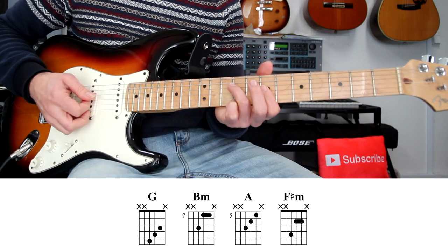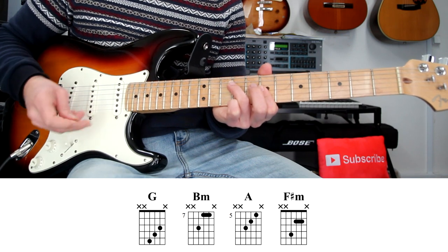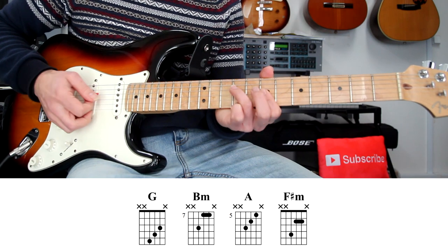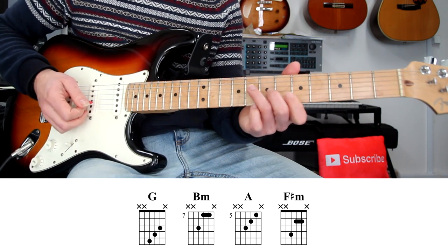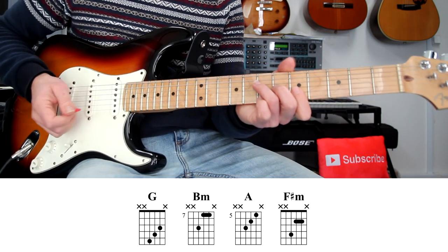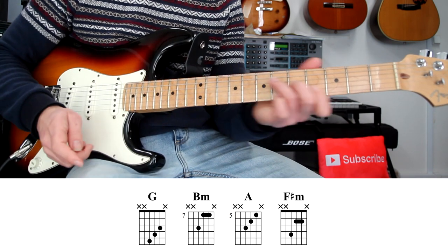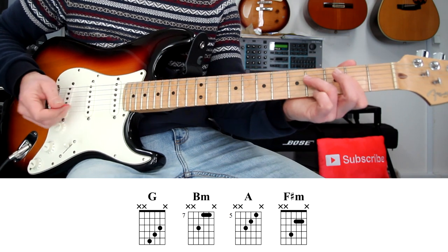Just slide until the seventh position and B minor. Fingers 3, 1, and 1. You can play the first string if you like, it will also sound good. Then slide back two frets and A major. Fingers 3, 2, and 1, just as the G, two frets above.